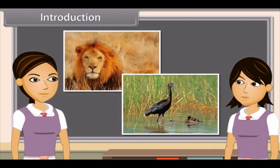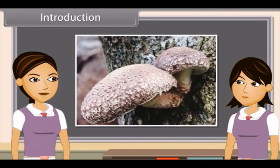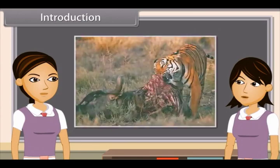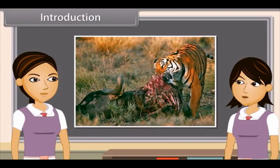We know that animals are heterotrophic and hence they depend on other organisms for their food. Animals need an external source of food. We can also say that they depend upon ready-made food, and this may come either from plants or from other animals.